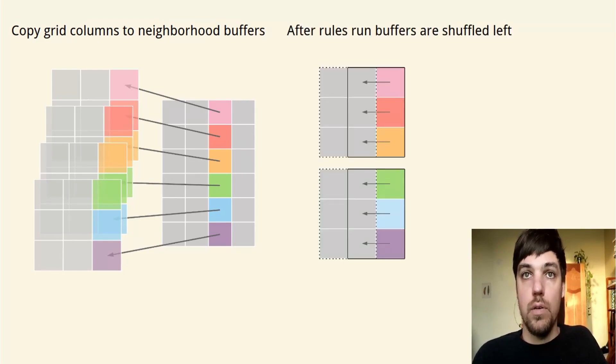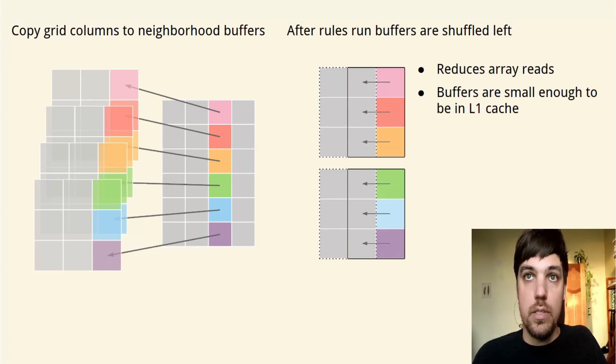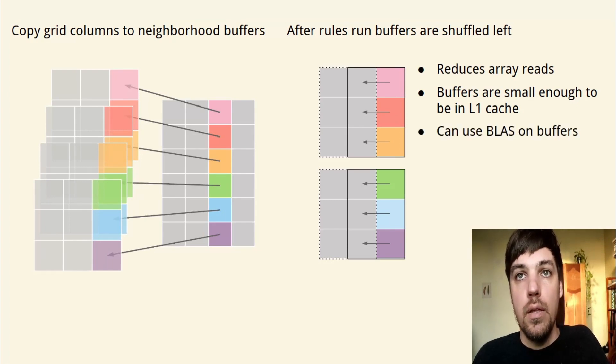Afterwards, shuffle the buffer across and load another column. This greatly reduces array reads and means buffers are small enough to be in the L1 cache, where the grid is normally in the L3 cache. It also means we can use BLAS routines on small buffers, which is really useful using dispersal kernels.